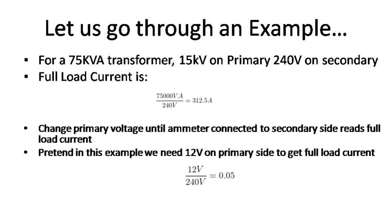Starting from 0 volts, we connect the ammeter on the secondary side and increase the voltage until we get a full load current.